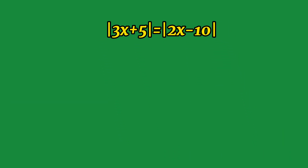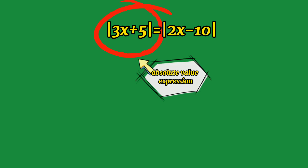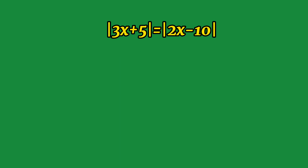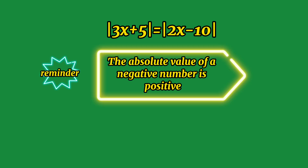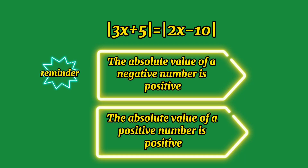The rule is that we are going to put at the left side only the absolute value expression. In this example, we are done — the left side of the equation is already an absolute value expression, so we can now proceed to solving the value of x. Just a reminder: the absolute value of a negative number is equal to positive, and the absolute value of a positive number is equal to positive.